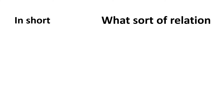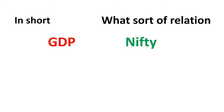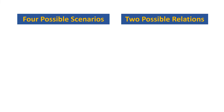The question comes: what sort of relation? Let's consider two variables — one is GDP of any country, and the other one is Nifty, which is Nifty 50 companies. When you try to find the relation between both of these two variables, we simply try to check whether both are positively related or negatively related. Let's understand this with an example and see how we find that relationship.